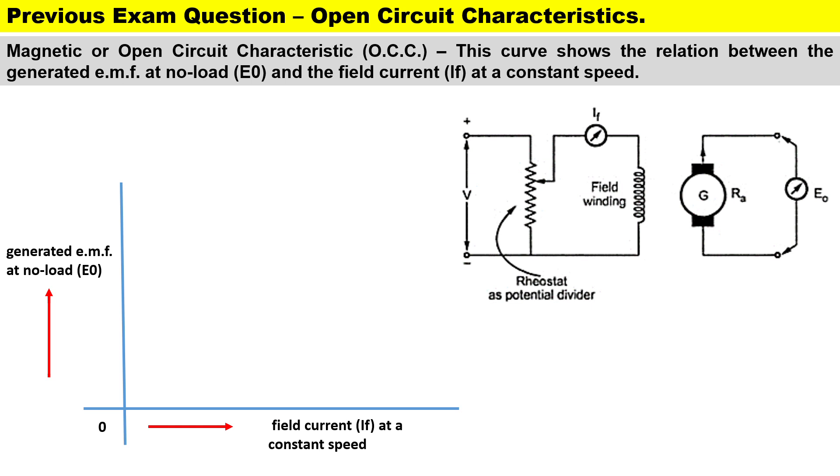First let me highlight a few things on our circuit diagram. You'll see that the machine operates separately excited. This means the armature is completely separated from the field winding. The field winding is connected to an external DC source, normally a battery, and for our armature which is producing EMF at no load, our voltmeter will be reading the EMF at no load.